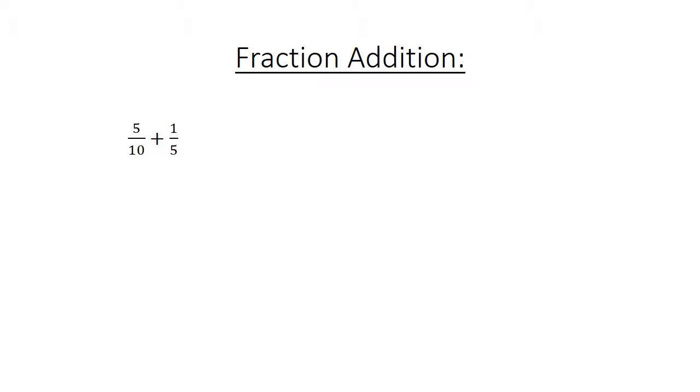Fraction Addition: 5 over 10 plus 1 over 5. Find the lowest common multiple. 5 over 10 plus 2 over 10 equals 7 over 10.